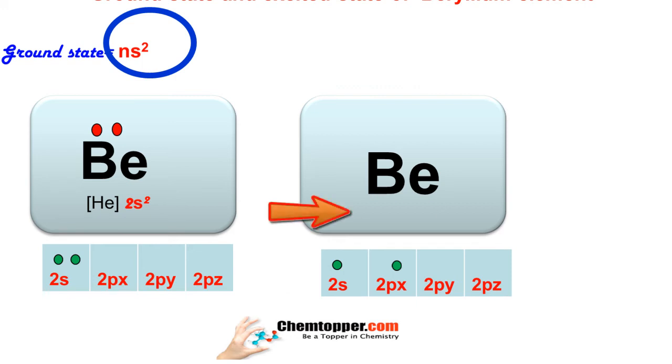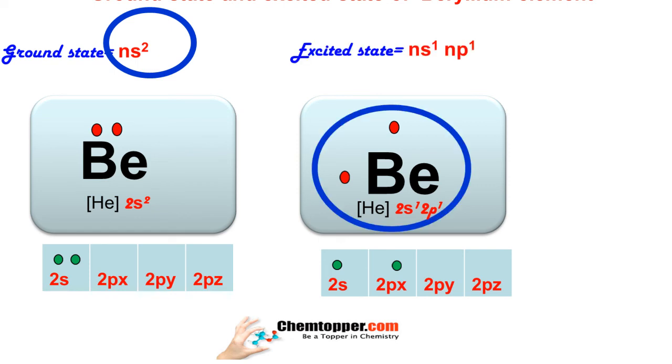This is the excited state electronic configuration of beryllium, where one electron is present in 2s and one electron is present in 2p. So we put these two electrons as two unpaired electrons around the symbol of beryllium. This is the correct Lewis dot symbol of beryllium atom in the excited state.